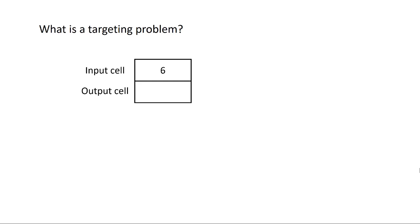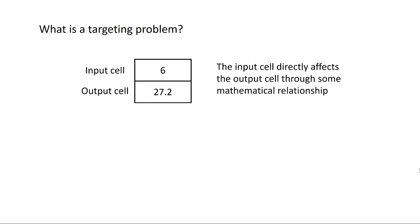And then we have an output cell. Maybe we have an output cell of 27.2. And somehow these are linked. So the input cell directly affects the output cell through some sort of mathematical relationship.